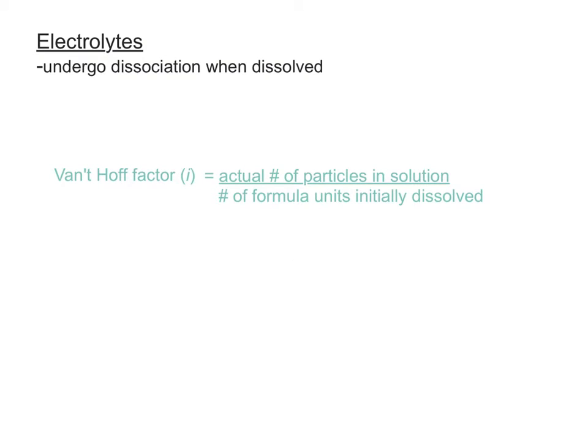And you can even continue this with strong electrolytes like CaCl2, calcium chloride. The Van't Hoff factor in this case would be three because it's going to dissociate into one Ca2+ cation, calcium cation, and two chloride anions. So you'll end up with three particles in the solution when you started with one mole of CaCl2 for instance.